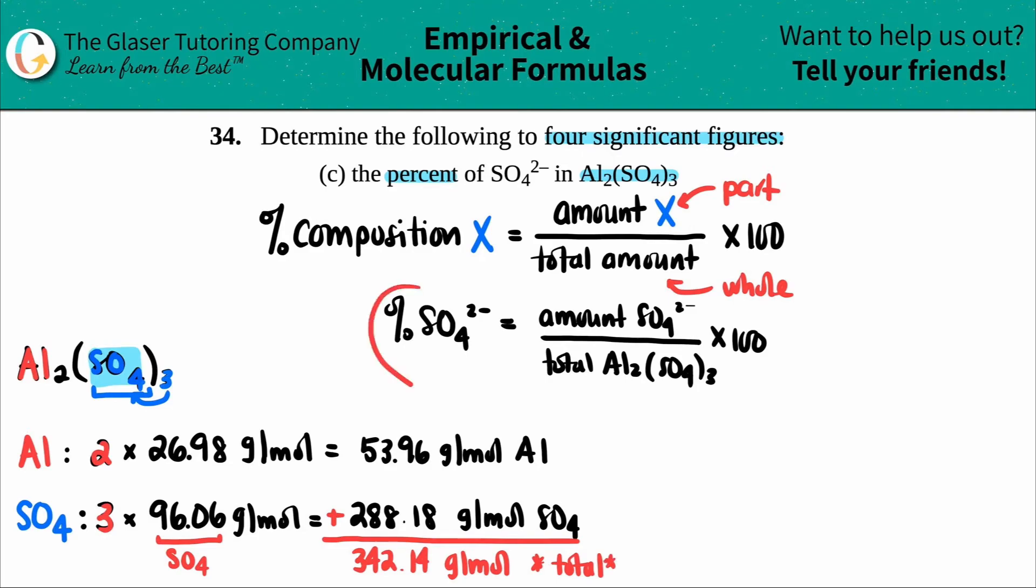Now we're ready to do our percent. They wanted us to find the percent of the sulfate ion. Does it matter that we have a 2⁻ here? Absolutely not. I just said SO₄, but technically you can do 2⁻. This has no weight of the molar mass. Remember, molar mass is only protons and neutrons. This is just telling us we gained two electrons. Electrons are so negligible in mass they're basically not even counted. That's why this doesn't matter.